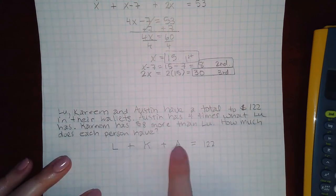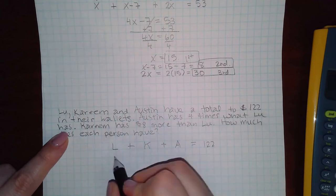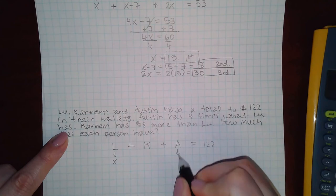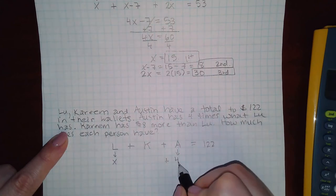It says Austin, they're talking about this guy, has four times what Lou has. So they're using Lou to describe what Austin has, which means Lou should be x. And then Austin, because it's four times that of Lou, would be 4x.